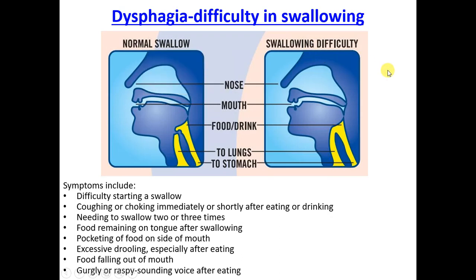Choking is one thing. Dysphagia — difficulty in swallowing — is another. It can cause choking, but more likely the real fear around dysphagia is aspiration, where food or liquids move into the lungs and cause aspiration pneumonia, because that foreign substance should not be there and bacteria act on it. It can be deadly for a compromised or elderly patient. Be sure to note the signs of dysphagia on this slide.